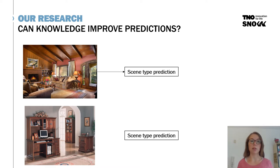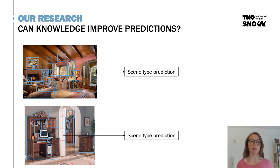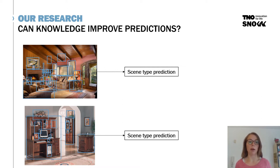In these scenes, we detect the available objects. As you can see here, we have detected some objects. But the objects that can appear in different types of rooms can be the same — so in the living room and in the home office, you can detect a chair or a table. And still, you want to predict their difference.